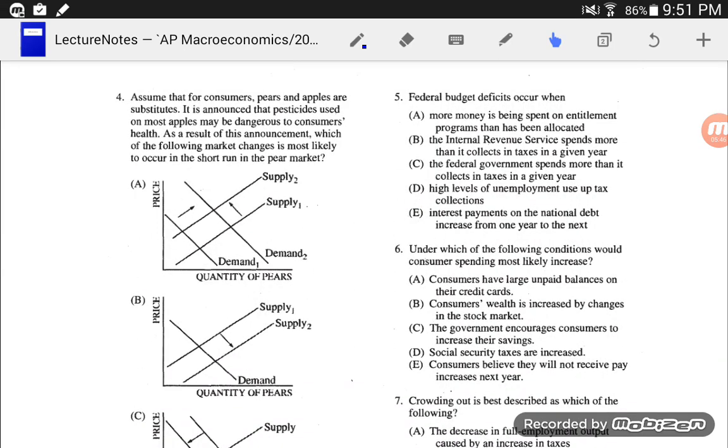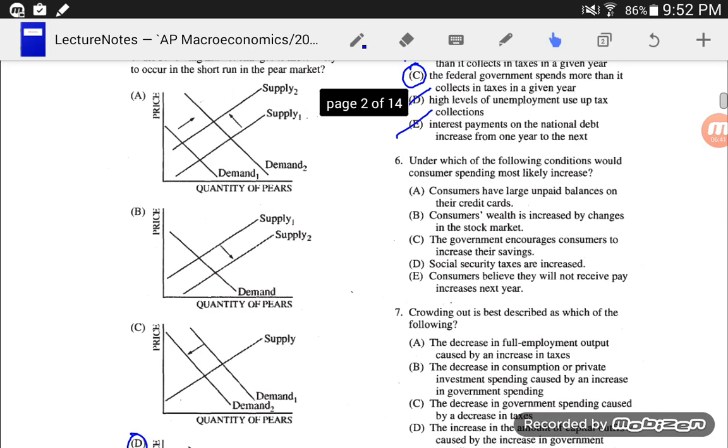Number five, federal budget deficits occur when... Well, federal budget deficit is just the government spending more money than it takes. I think I just answered that question. The federal government spends more than it collects in a tax year. So no, it's not more money being spent on entitlement programs than has been allocated. That doesn't necessarily mean a deficit. If the IRS spends more than it collects in tax... The IRS doesn't spend the money. The IRS collects taxes. Congress spends the money. High levels of unemployment use up tax collections? No. Interest payments on the national debt increase from one year to the next. That might be happening, but that doesn't necessarily mean there is a deficit.